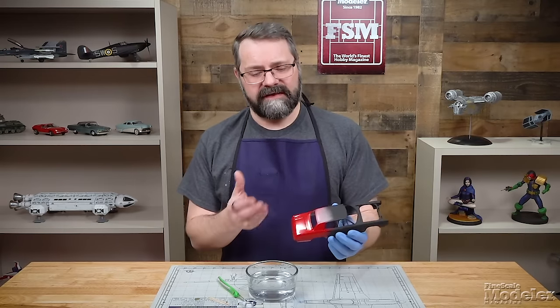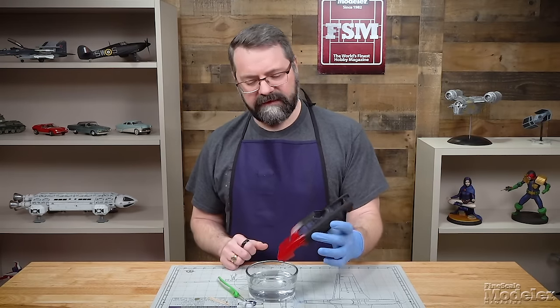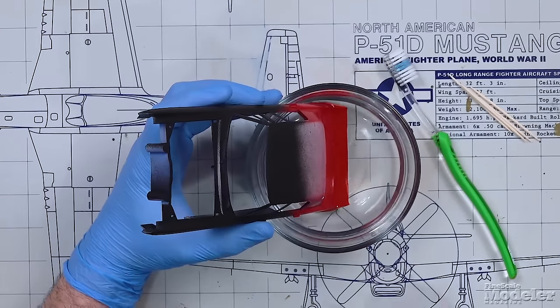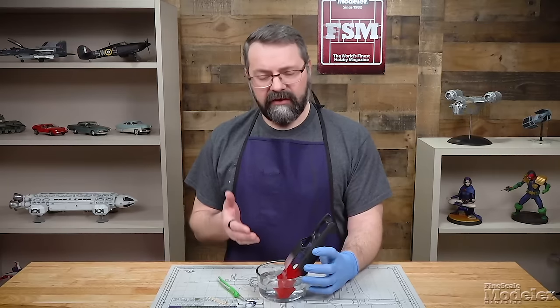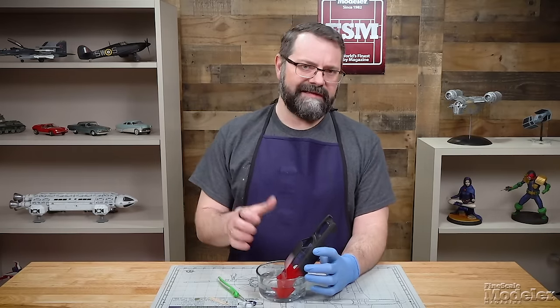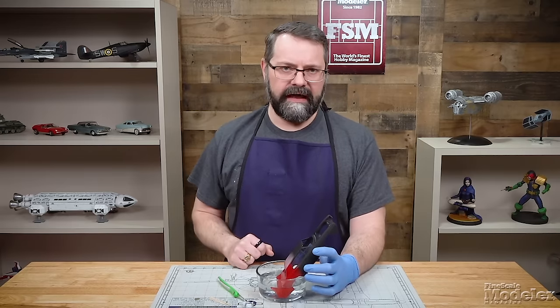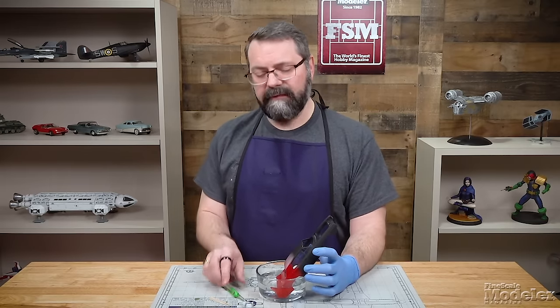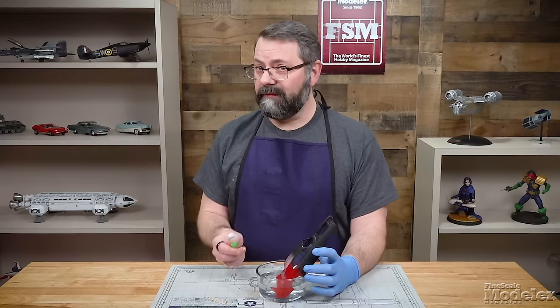What we're going to do here though, because I want to show you how this works, we're going to submerge the back end into the alcohol and give it some time to do its work. Let the alcohol penetrate the paint and start eating away at it. Once it's softened the paint and it's starting to do the job, then we go in with the toothbrush.